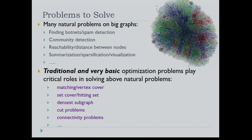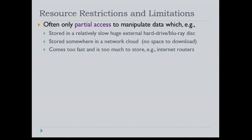The basic way to solve these problems is through traditional fundamental optimization problems like matching, vertex cover, set cover, hitting set, densest subgraph, and others. To understand the complexity of these problems better, we need a simple but useful model, but first we need to understand the restrictions that big data imposes.